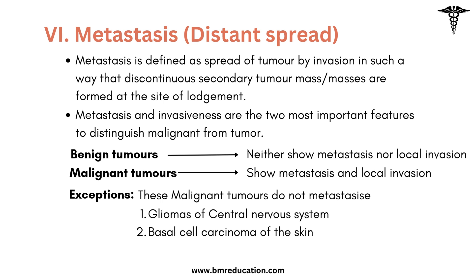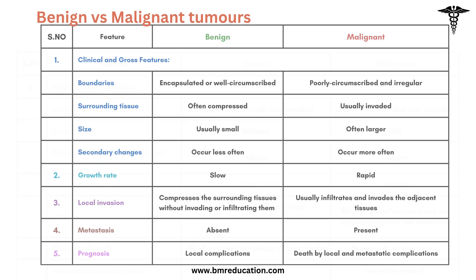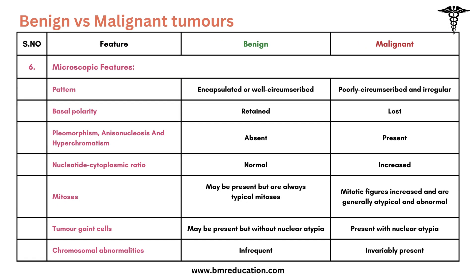These are the differences in characteristic features of benign and malignant tumors shown in tabular format. It describes the differences between benign and malignant tumors in clinical and gross features, growth rate, local invasion, metastasis, prognosis, and microscopic features.